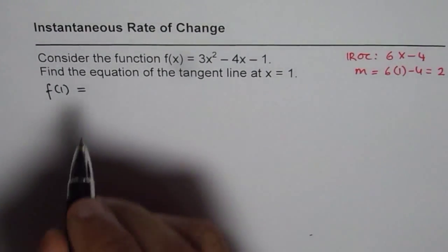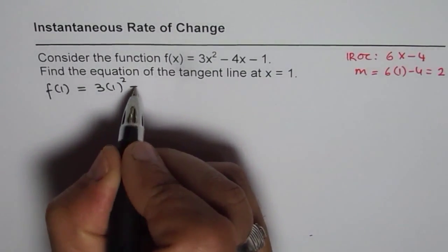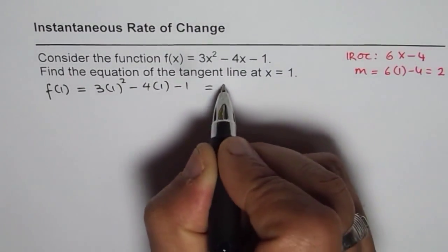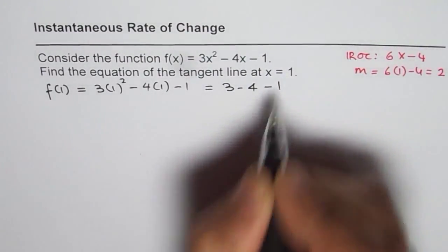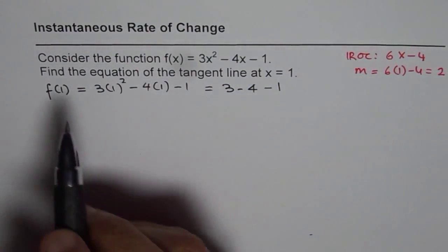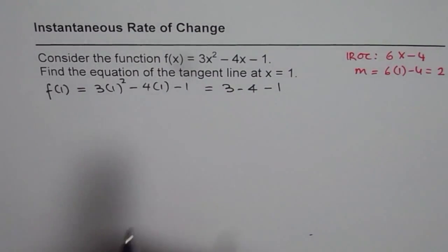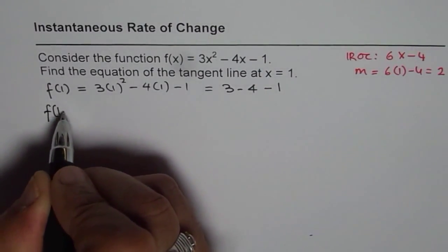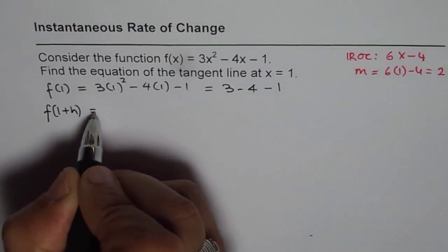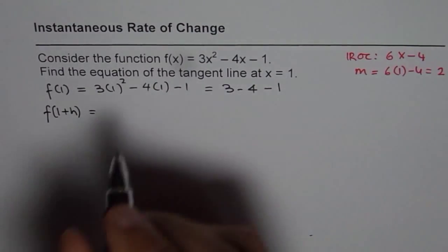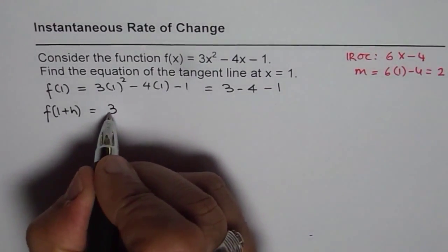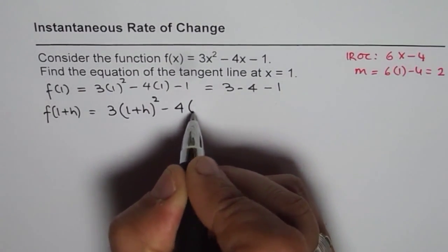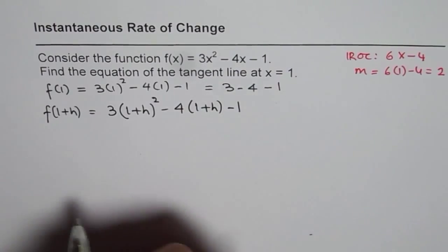Value of function at 1 is 3 times 1² - 4 times 1 - 1 and that is 3 - 4 - 1. Since we are interested in finding equation of a tangent line, we want instantaneous rate of change. That means we also want value of the function at 1 plus slightly more than 1, let it be h. Then, that will be 3(1 + h)² - 4(1 + h) - 1.